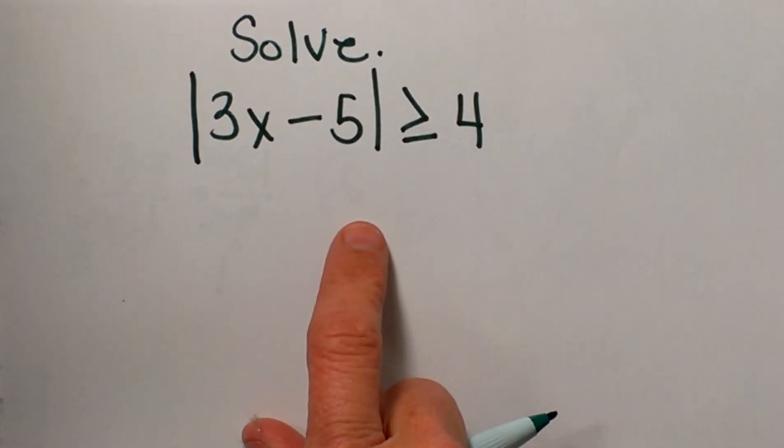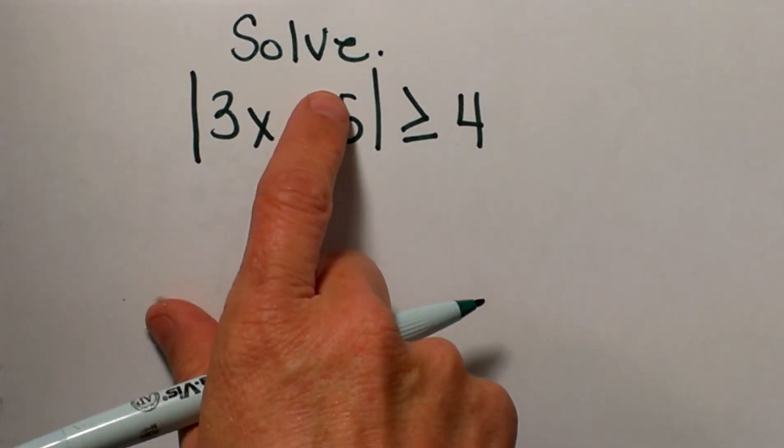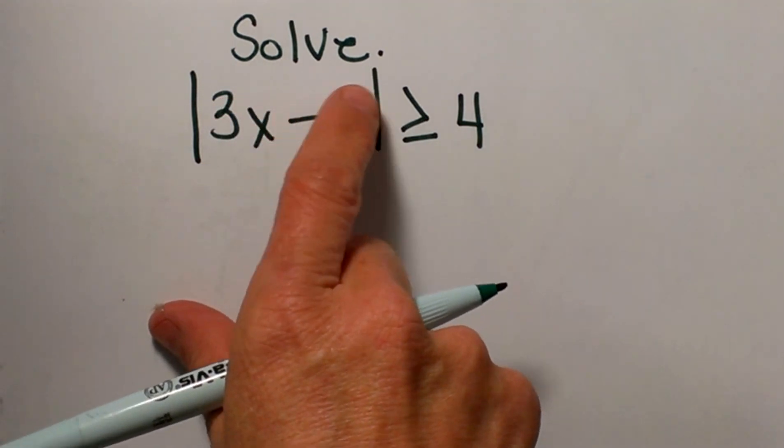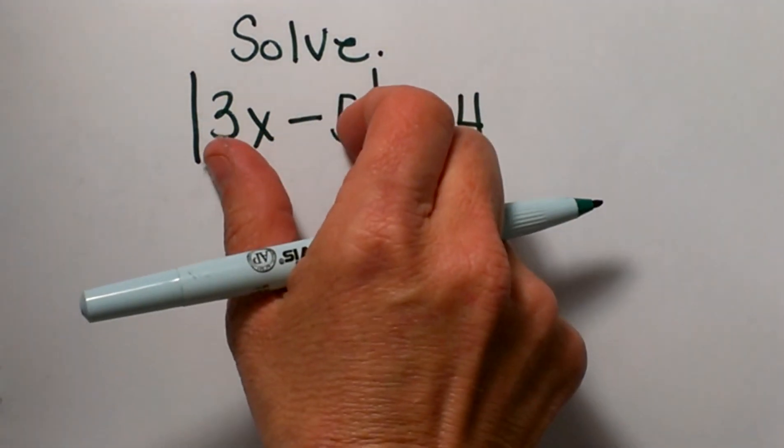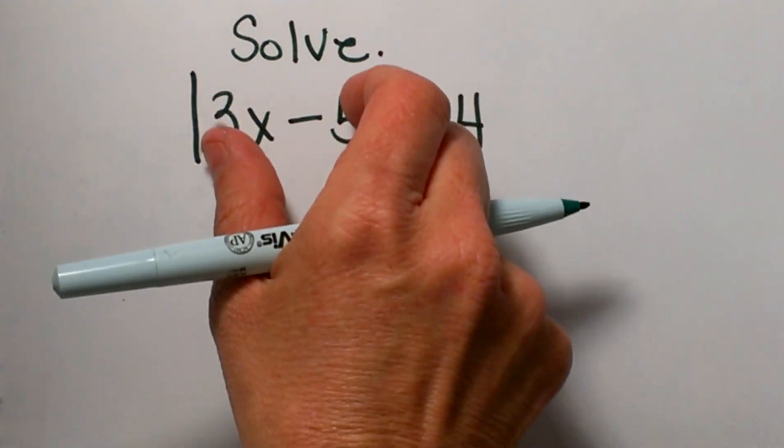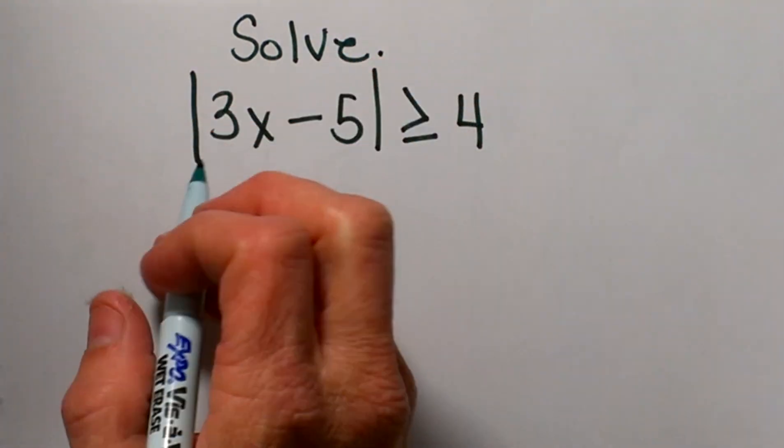So let's go ahead and start solving this one. The first thing you want to do when you solve an inequality is you need to look at two cases: when is all this greater than positive 4, and you have to look at this as if this was positive 4 and positive 5. What would that look like?